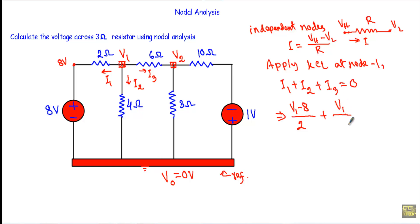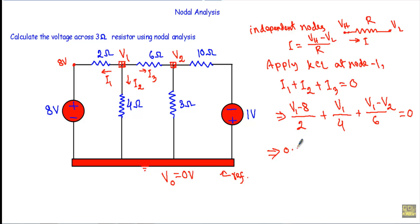After that, I3 is flowing from node 1 to node 2 through the 6 ohm resistor. Node 1 is at higher potential, so I3 equals V1 minus V2 divided by 6 ohm. Performing the full calculation for KCL at node 1, I get 0.916·V1 minus 0.16·V2 equal to 4. This is equation number 1.